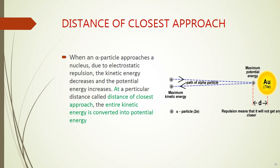Distance of closest approach: when an alpha particle (positively charged) approaches a nucleus (also positively charged), there is an electrostatic force of repulsion. As a result, kinetic energy starts decreasing and potential energy starts increasing. At one particular point — called the distance of closest approach — the entire kinetic energy is converted into potential energy, and after that, the alpha particle retraces its path.